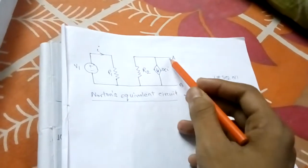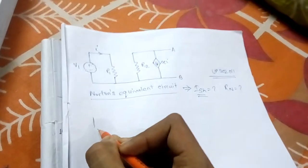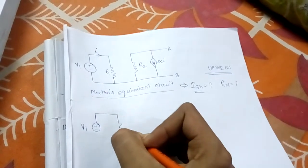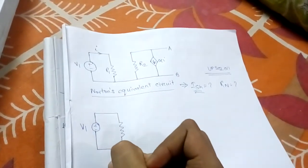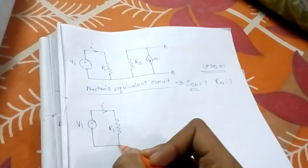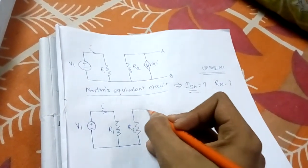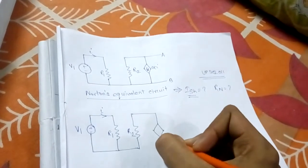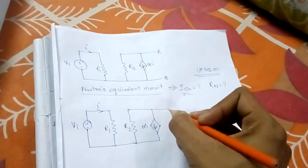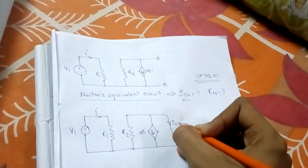To find I_sh, we first short the two terminals. Let's redraw the circuit: we have V1, the current through R1 is I, then R2, and a dependent current source of alpha times I.